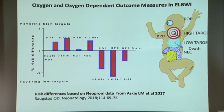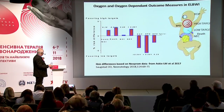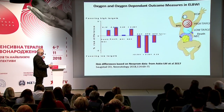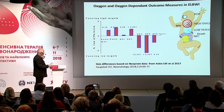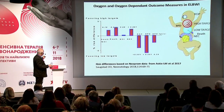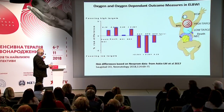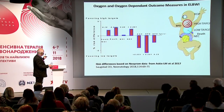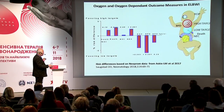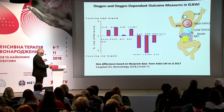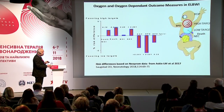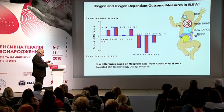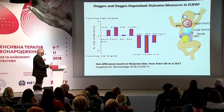Looking at the risk differences from NeoProm: death is significantly increased in the low saturation target group. Neurodevelopmental impairment and death combined is not significant. Necrotizing enterocolitis also benefits from a high saturation target. ROP benefits from a low saturation target. For BPD, if you define it physiologically, there's no effect of oxygen. So the oxygen-dependent factors are death, necrotizing enterocolitis, and ROP.